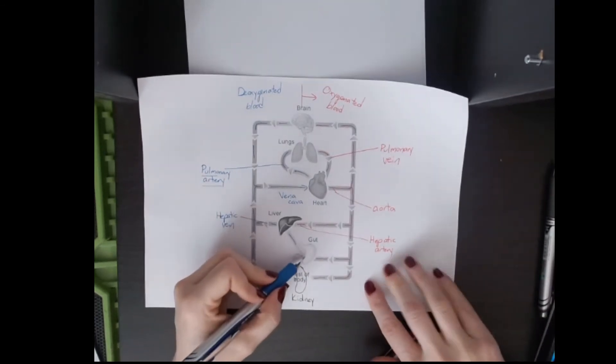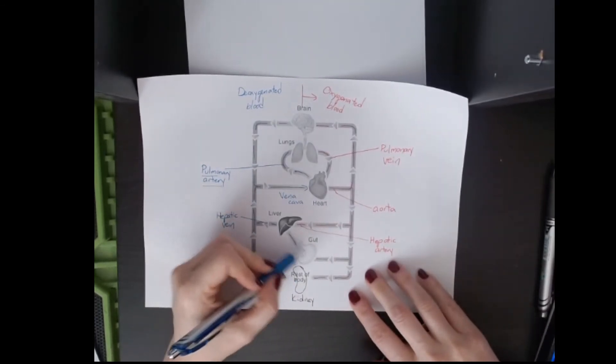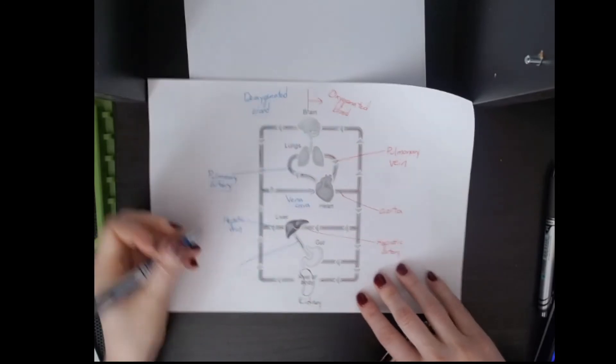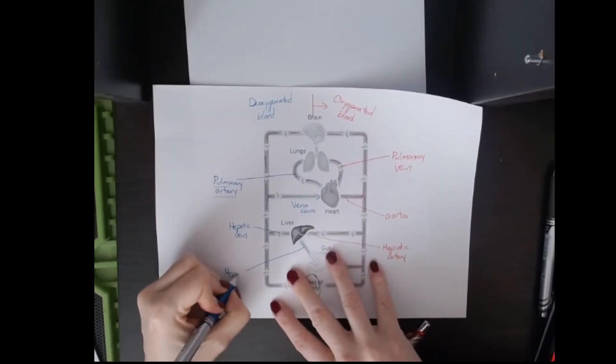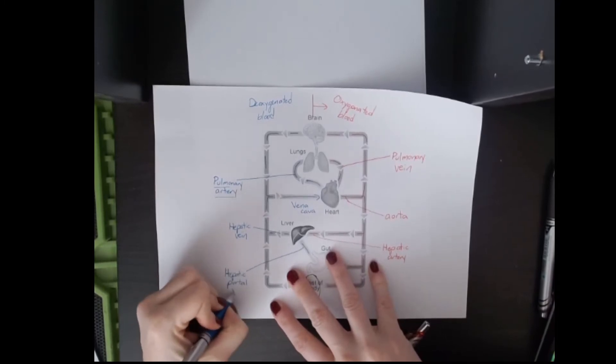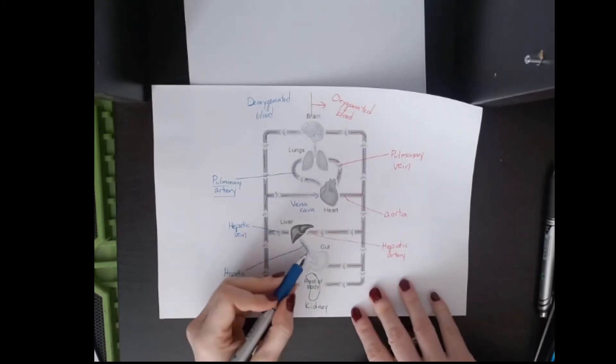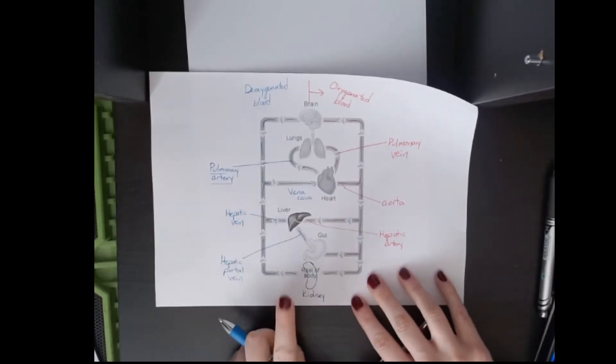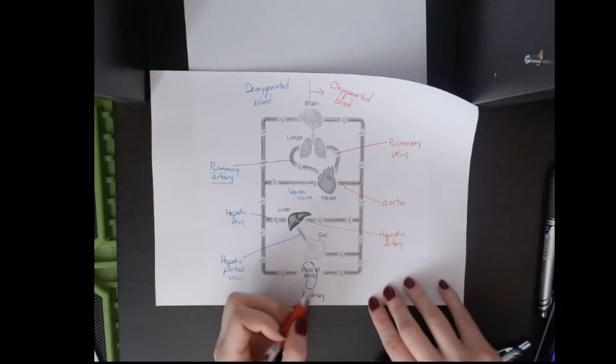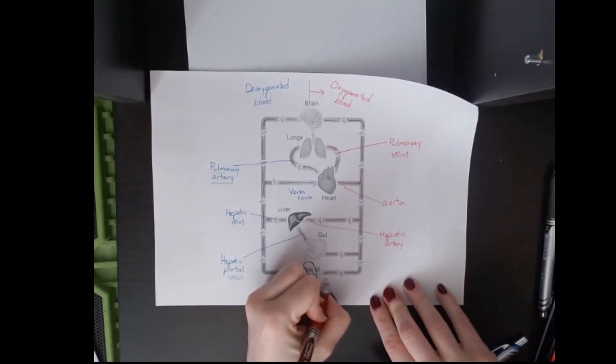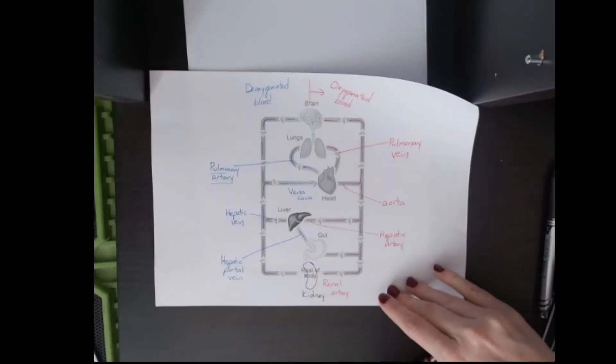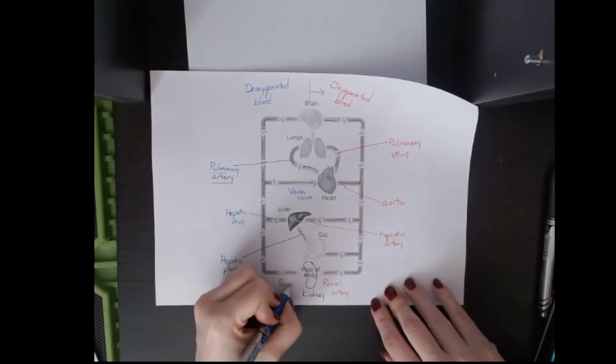And then here between the gut, you don't need to know what goes into the gut, but between the gut and the liver, you do need to know this one. This is called the hepatic portal vein. So it is a vein. It's going from gut to liver, and I'll talk about why in a second. And then you have the kidney. So anything with the kidney is renal. So this is the renal artery going in and the renal vein leaving.